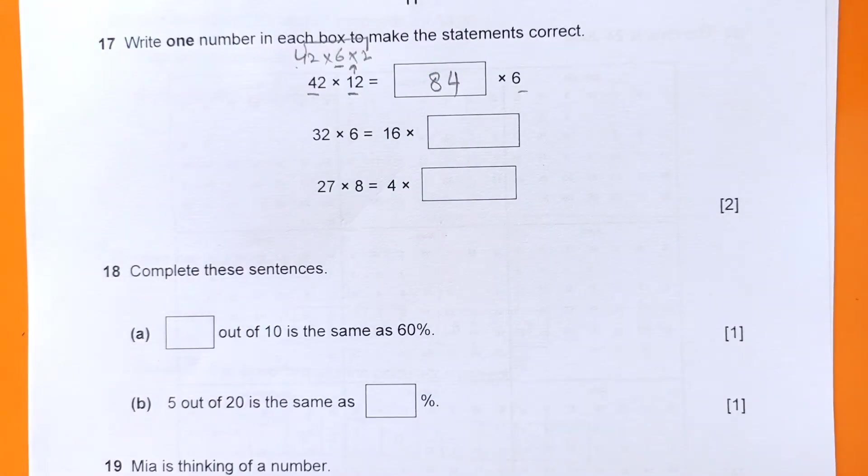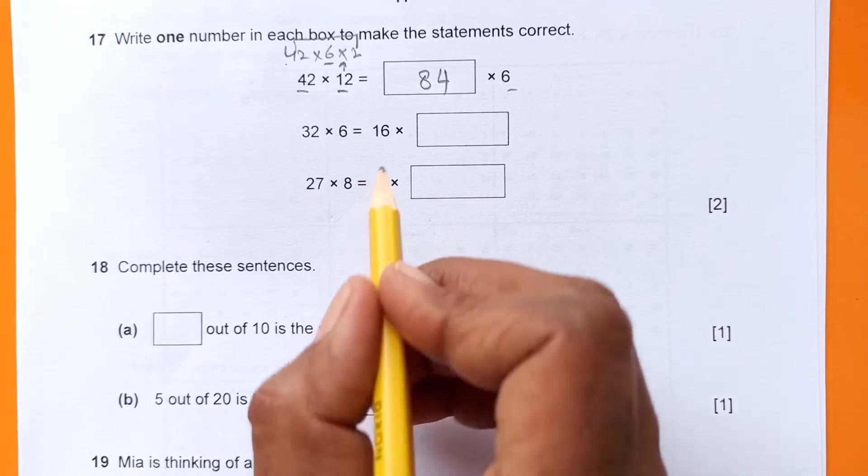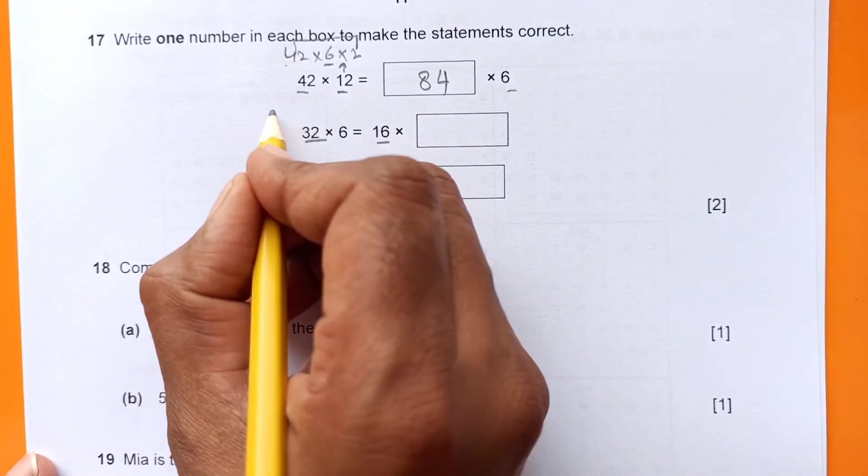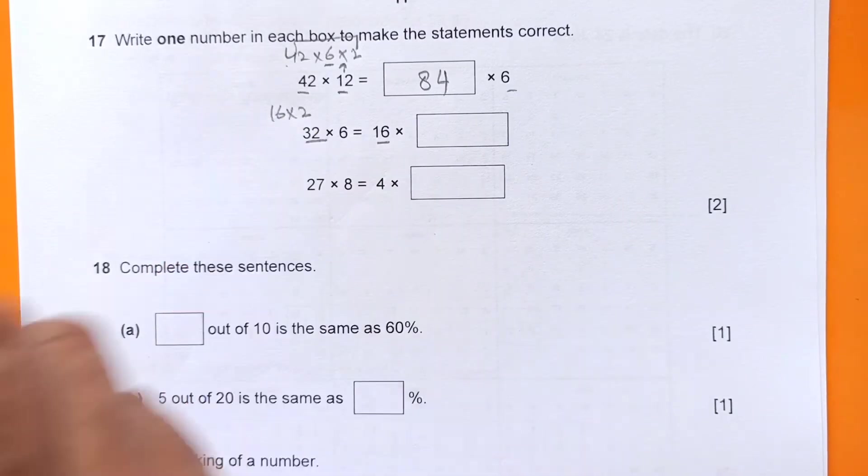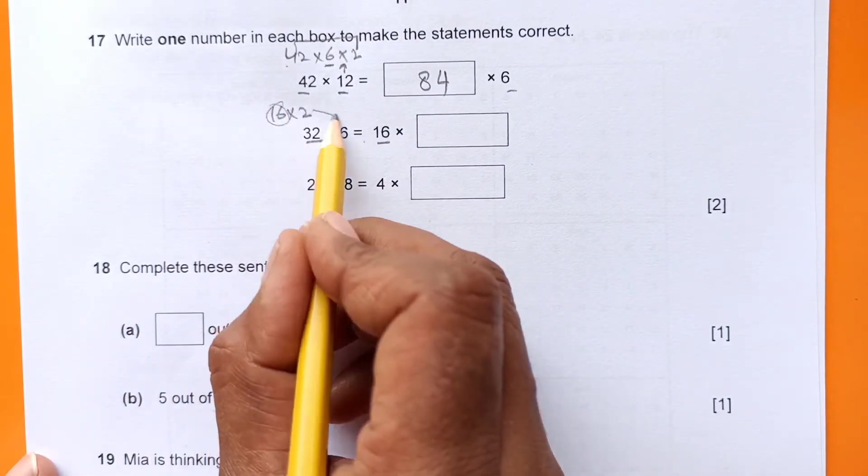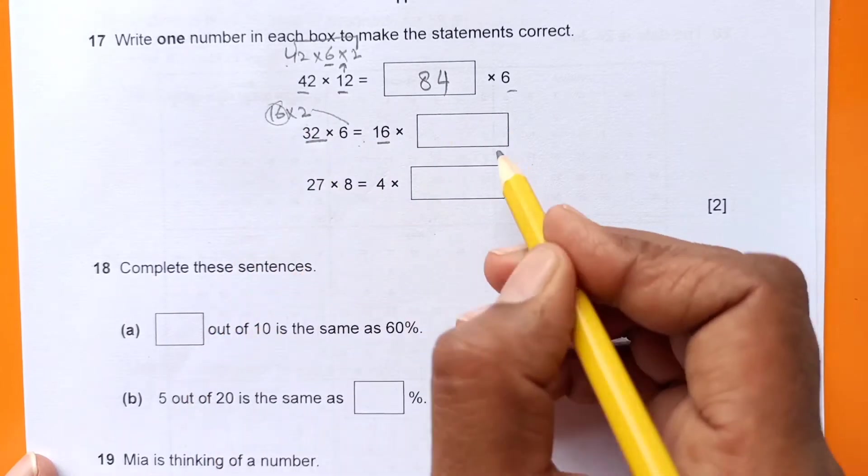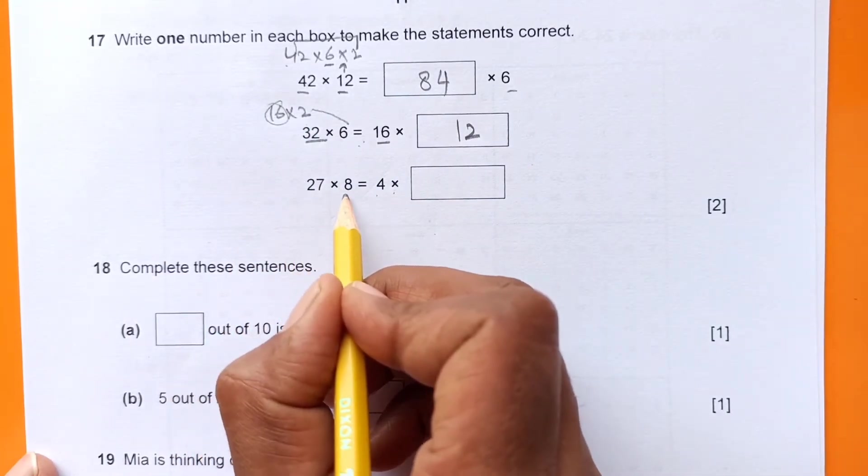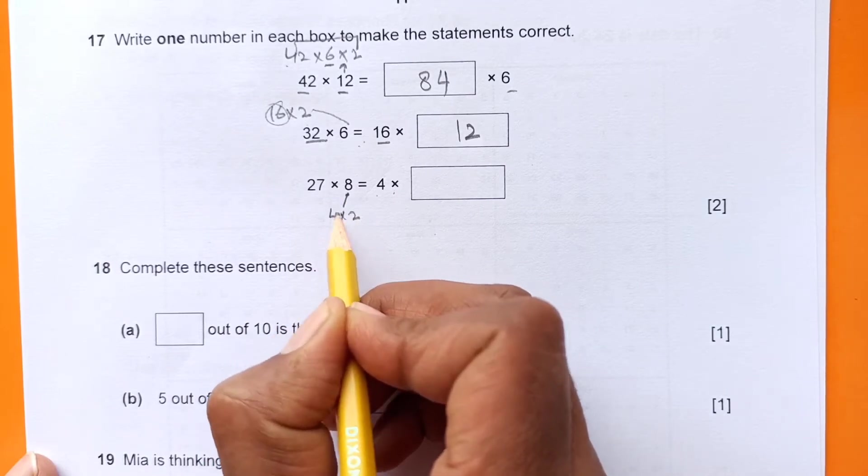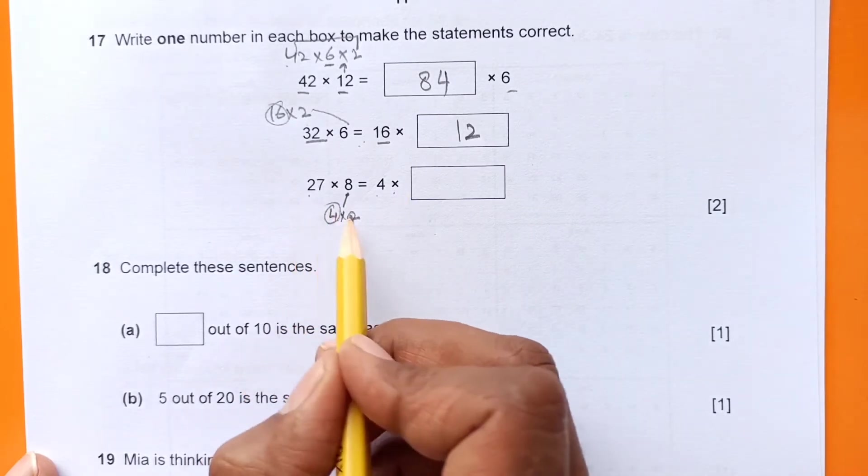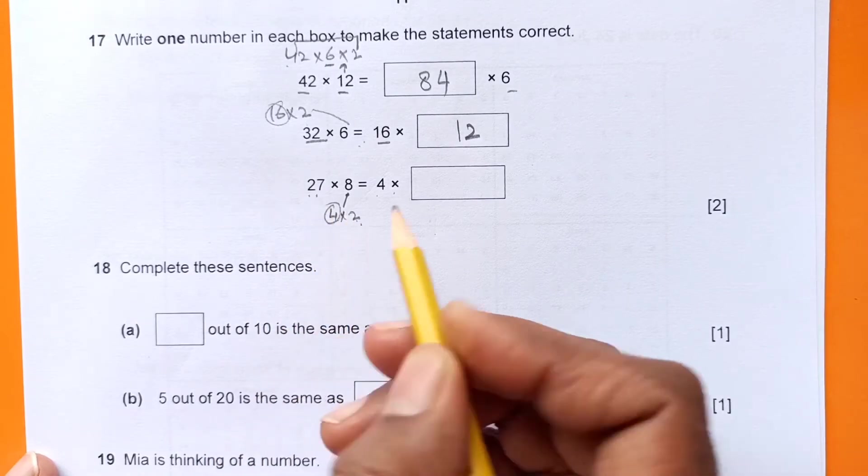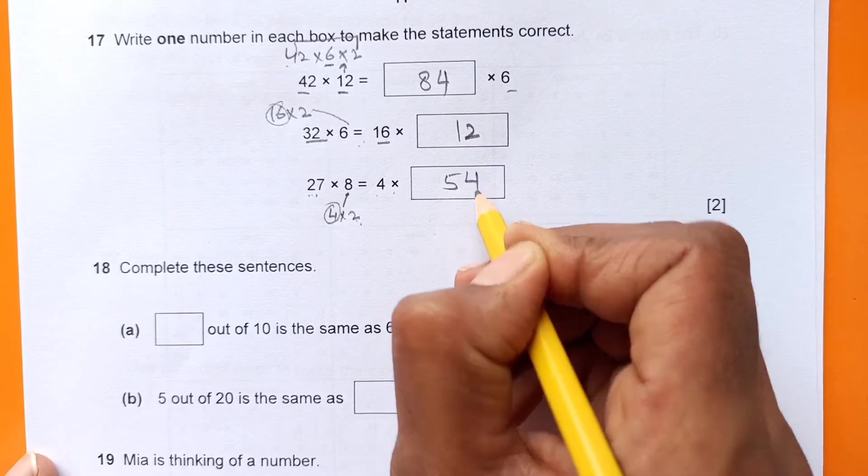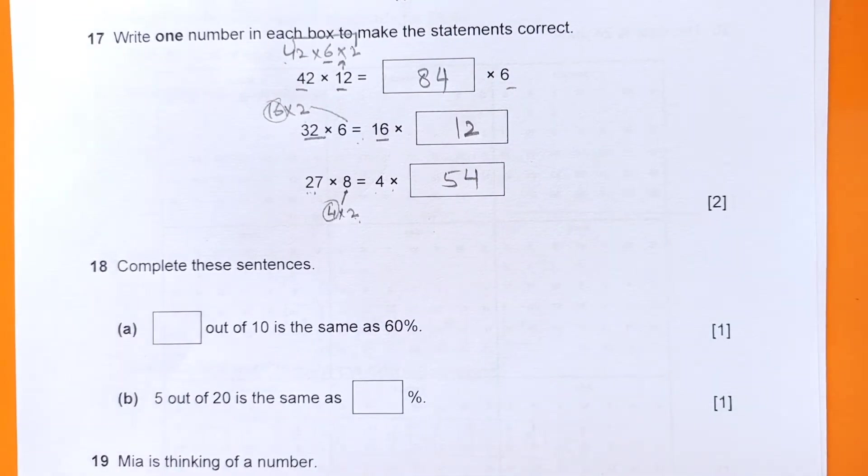The next one is 16 times something, so we can split this 32 as 16 times 2. 16 is already there, so we need 2 times 6, that means 12. Now 4 times - this can be split as 4 times 2, so 4 is already there. We need 27 times 2, which is 54. This is a 2 marks question.